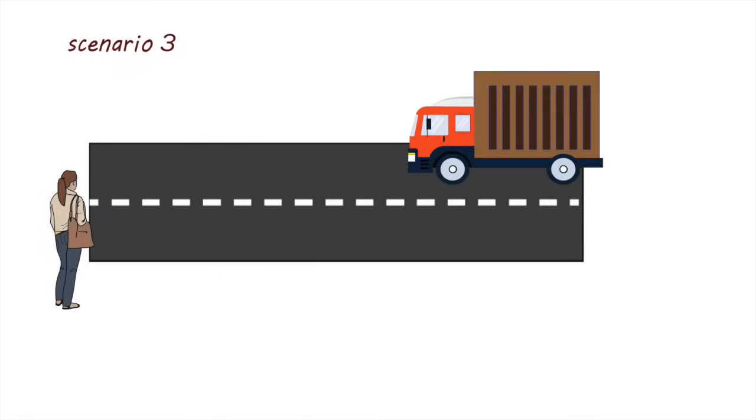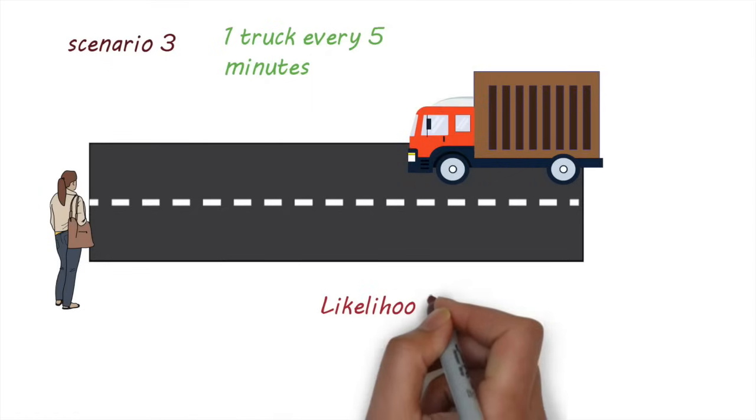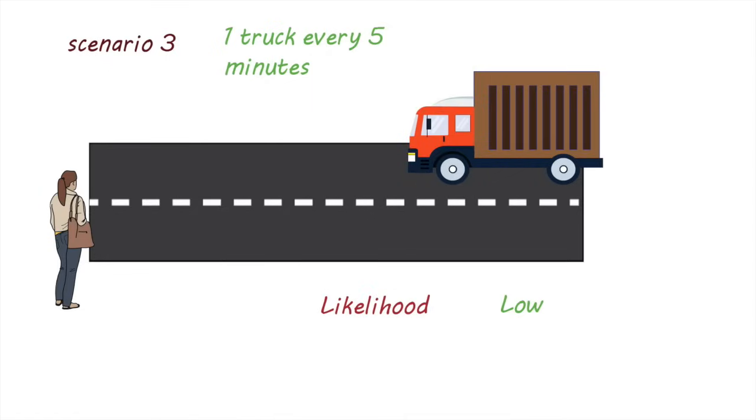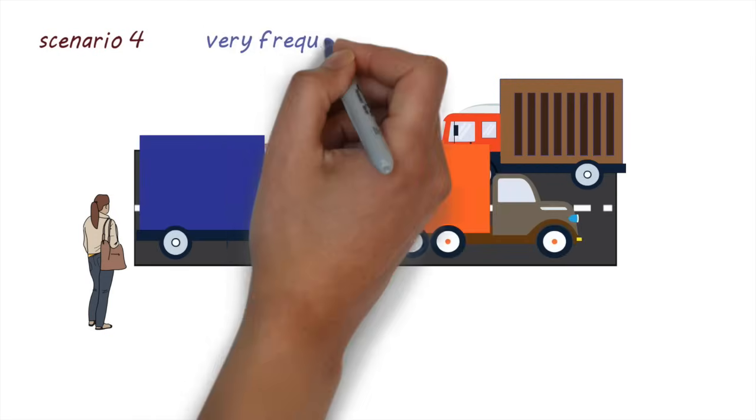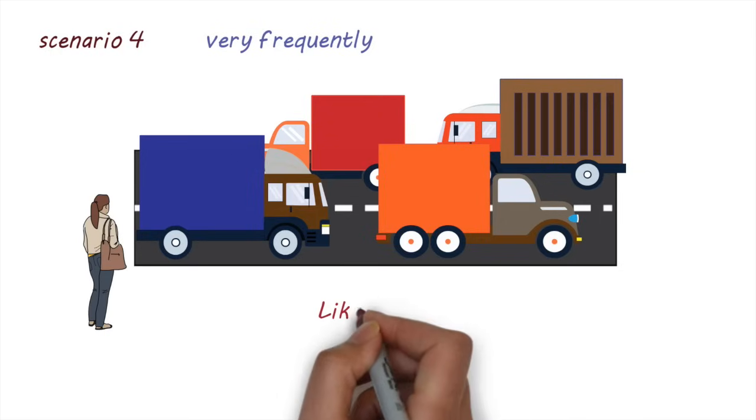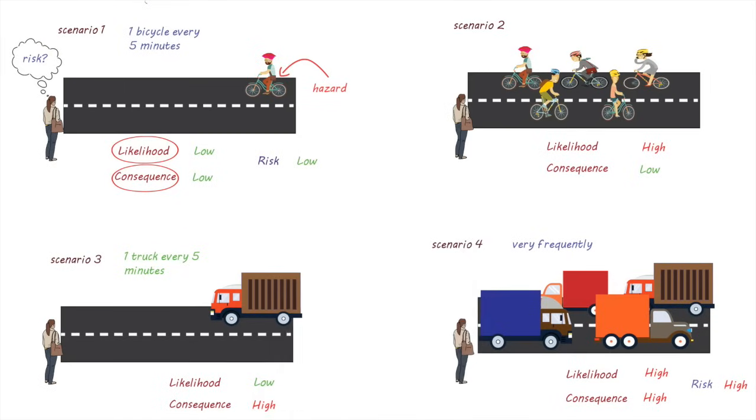But what if things were different? Let's change that bicycle to a truck. Now with the truck passing every five minutes, the likelihood of a crash would still be low, however the consequence is far more severe. Now imagine if it was a busy truck route and trucks were going on this road very frequently. In this scenario, both the likelihood of a crash and the consequence will be high, which means that the overall risk would be high. You wouldn't even consider crossing this road, right?